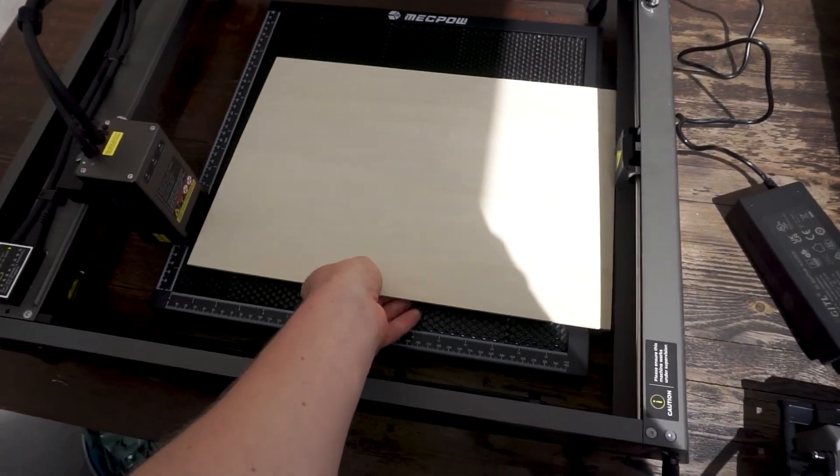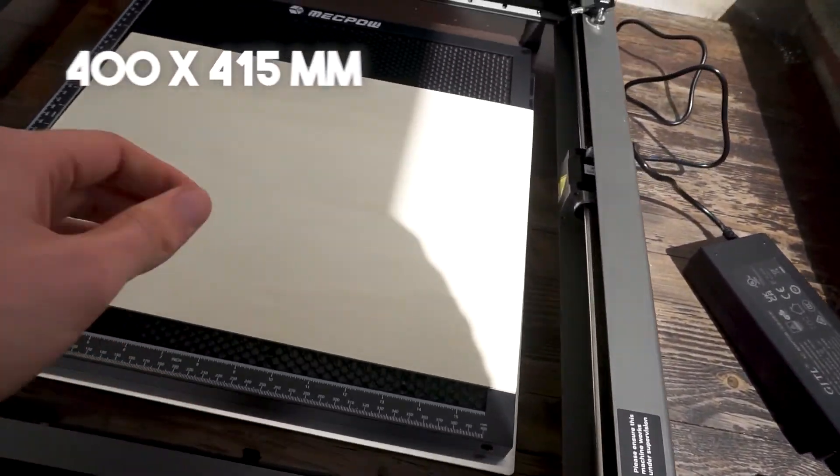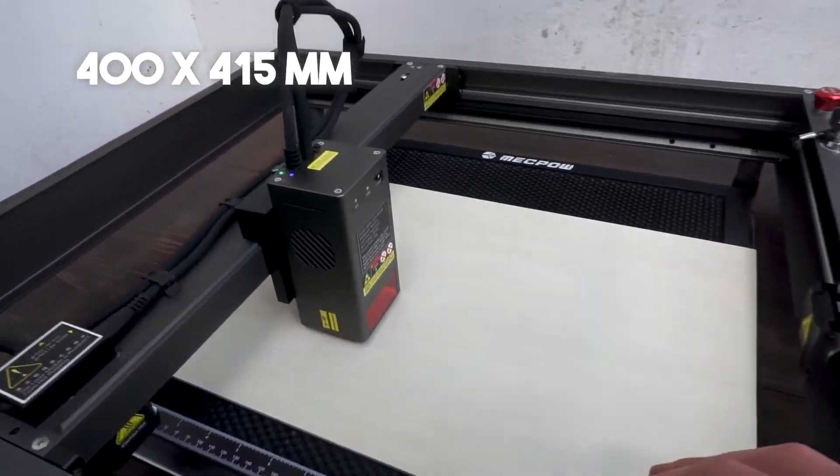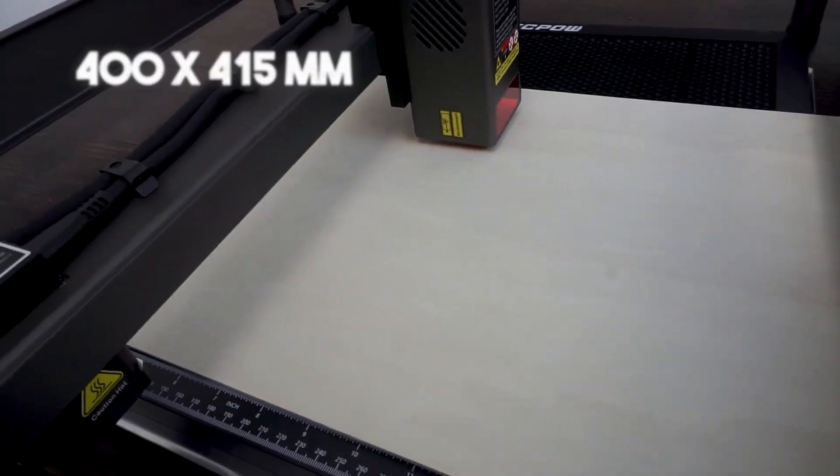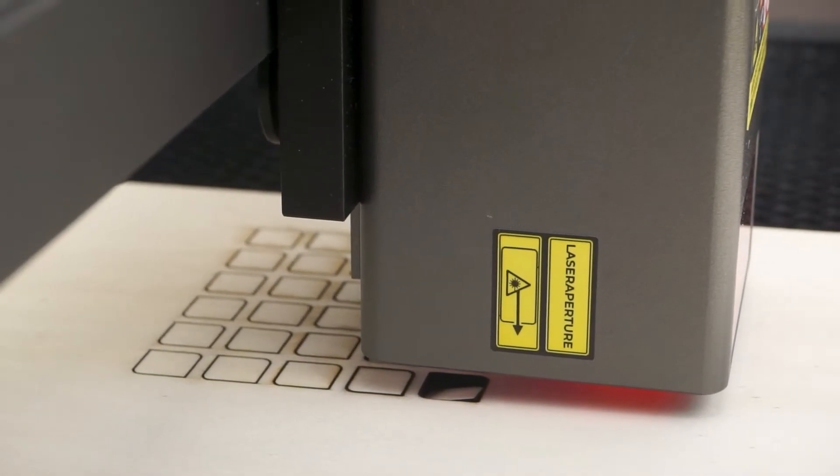Another positive is the large cutting surface. 400 x 415 mm is almost two lengths of A3 paper, so you can fit quite a few things on one cut.